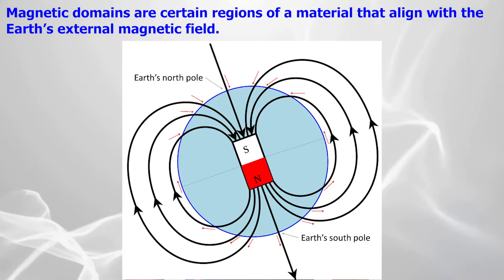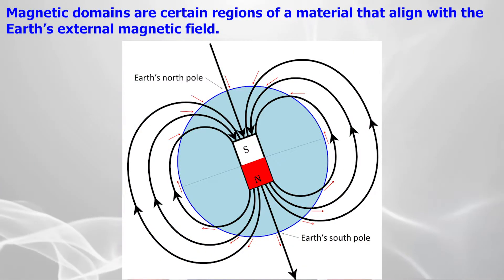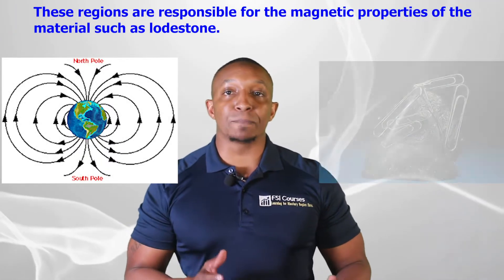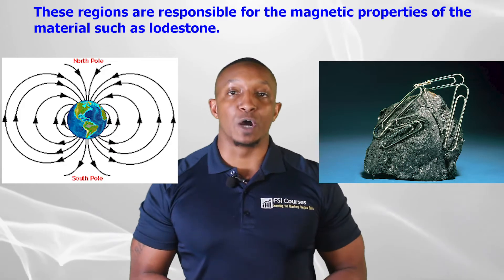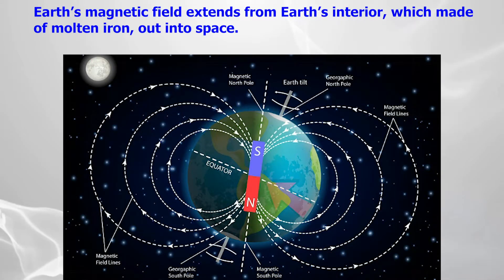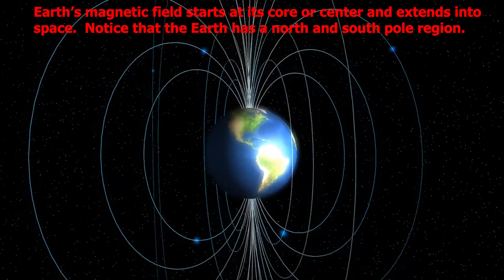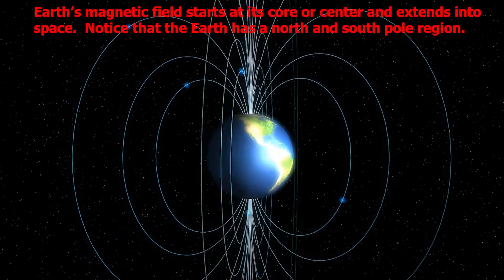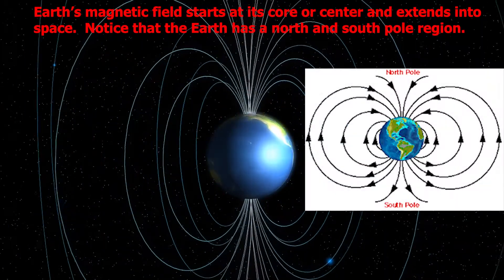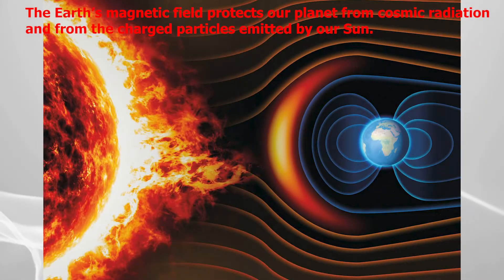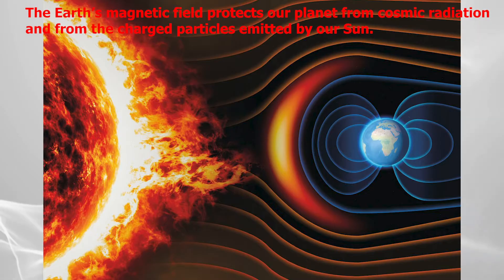Magnetic domains are certain regions of a material that align with the Earth's external magnetic field. These regions are responsible for the magnetic properties of materials such as lodestone. Earth's magnetic field extends from Earth's interior, which is made of molten iron, out into space — starting at its core and extending outward. The Earth has a north and south pole region, and its magnetic field protects our planet from cosmic radiation and from the charged particles emitted by our sun.